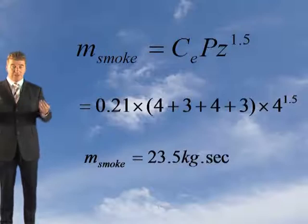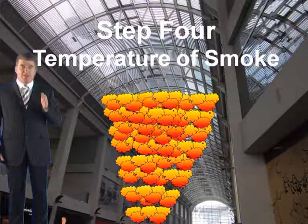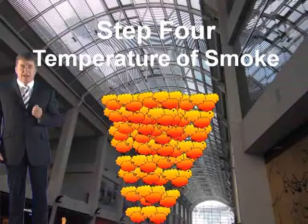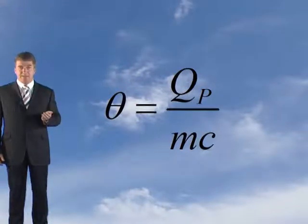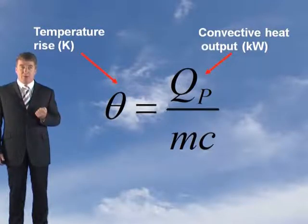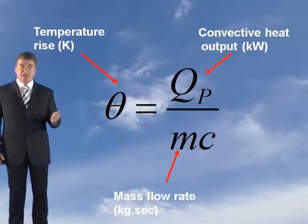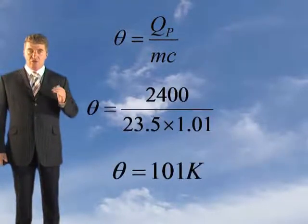So the mass flow rate of the worst case fire is going to be 23.5 kilograms per second — that's what we've got to extract out of that area in each reservoir. Now we know how much smoke has been produced, we need to know how hot it's going to be. Step four is determining the temperature of the smoke. To determine the temperature, you use: theta equals QP divided by mc, where theta is the increase in temperature, QP is your convective heat output, M is your mass flow rate, and C is your specific heat capacity of smoke. Evaluating this gives a temperature rise of 101K.